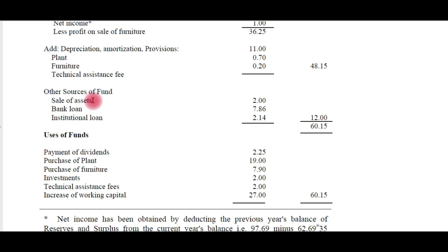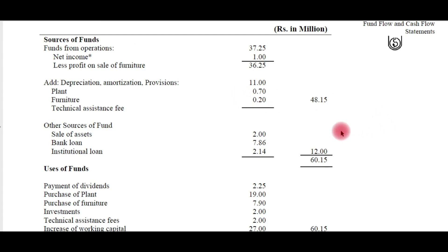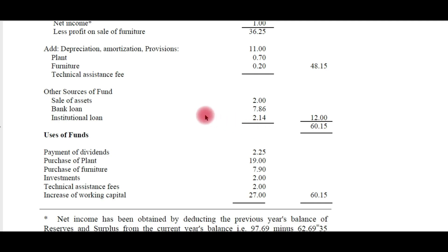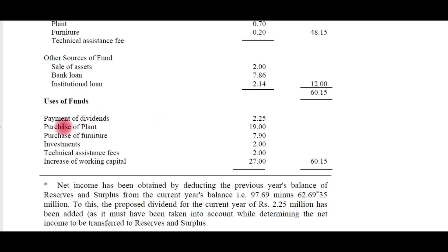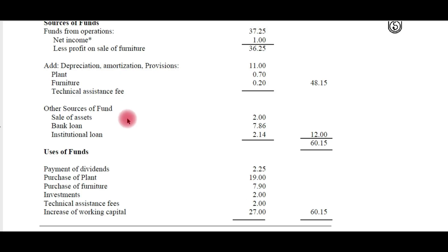Other sources of funds include: proceeds from sale of fixed assets, bank loans, and institutional loans — bringing in a total of 12 rupees. Combined with 48.15, total inflow of funds into the business is 60.15. Uses of funds include: payment of dividends, purchase of plant, purchase of furniture, investments, technical assistance fees, and increase of working capital. Total utilization is also 60.15. Sources of funds increase working capital; uses of funds decrease working capital.